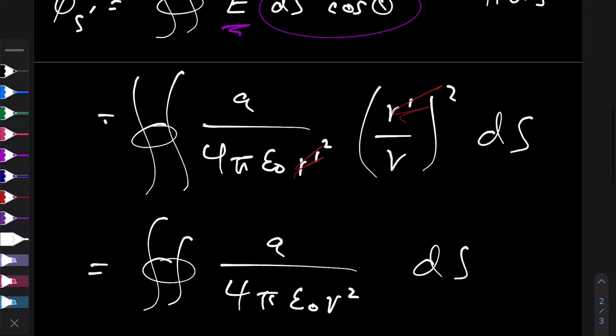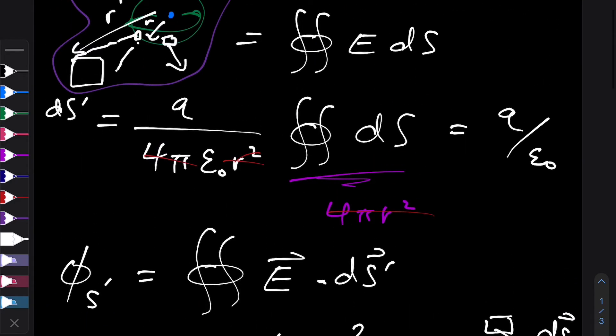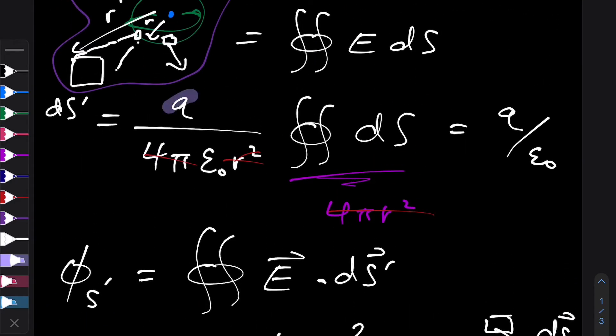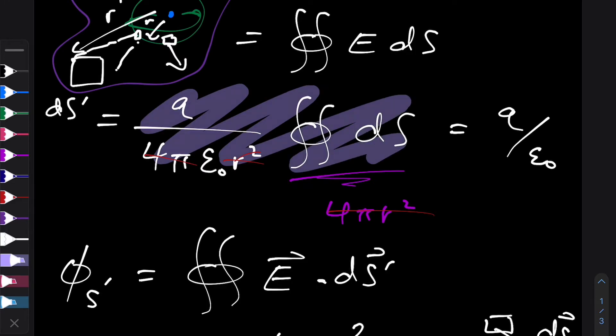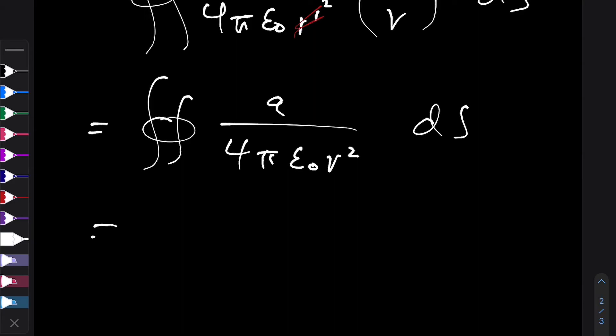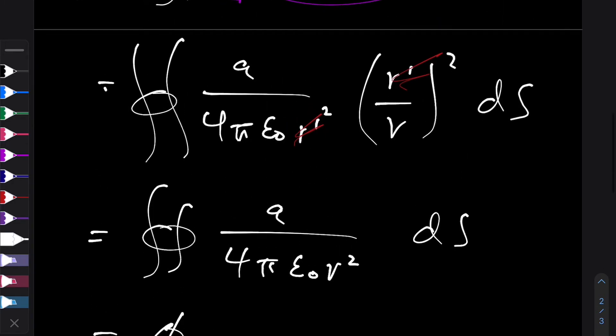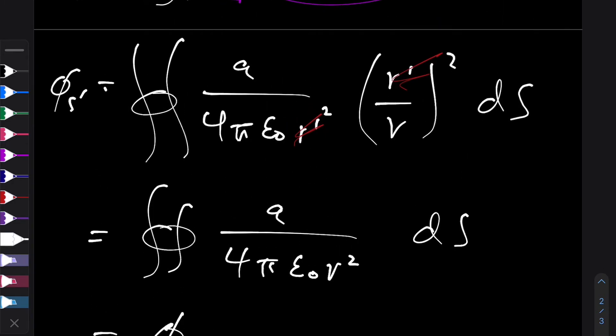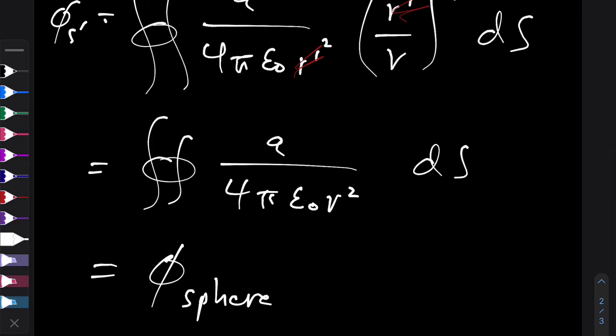And if you think about it, this is exactly the same as the integral we had over here. So what that tells us is, this flux is exactly the same as the flux through the sphere. So the flux through any surface is exactly the same as the flux through the sphere, and we know that that is q over ε₀.